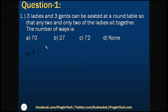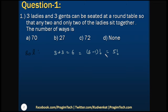First, without any condition, we have 3 ladies and 3 gents — a total of 6 persons. Six people can be arranged around a circular table in (6-1)! = 5! ways. So without any condition we can arrange 6 persons around the table in 5! = 120 ways.